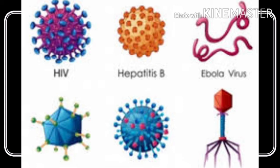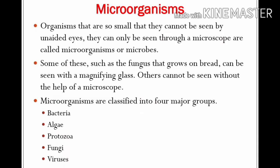Today we will discuss about the harmful microorganisms as well as an introduction to microorganisms. Organisms that are so small that they cannot be seen by unaided eyes and can only be seen through a microscope are called microorganisms or microbes. Even if you look at the name carefully, it is made up of two words: micro and organisms. Micro means very small and organisms means a living thing.